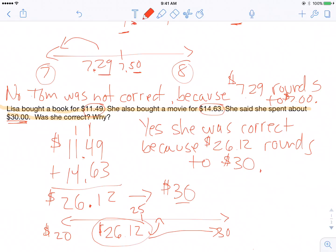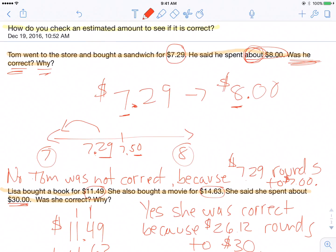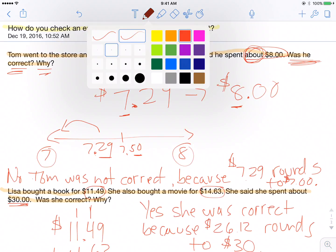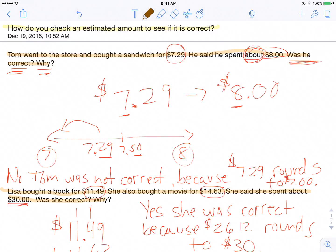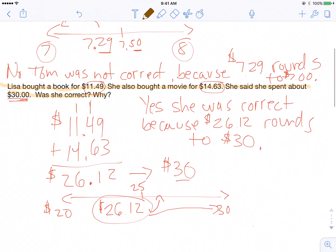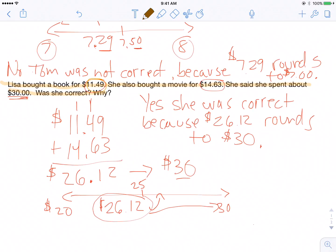And that's how you would answer a question like that. So just to review, up at the top, this was a one-step kind of question because Tom had only bought one thing. We just had to decide whether the amount rounded was correct. At the bottom, this was one more step because Lisa had bought two things. So we first had to do an addition problem to find her total, then decide if the rounded amount was correct.